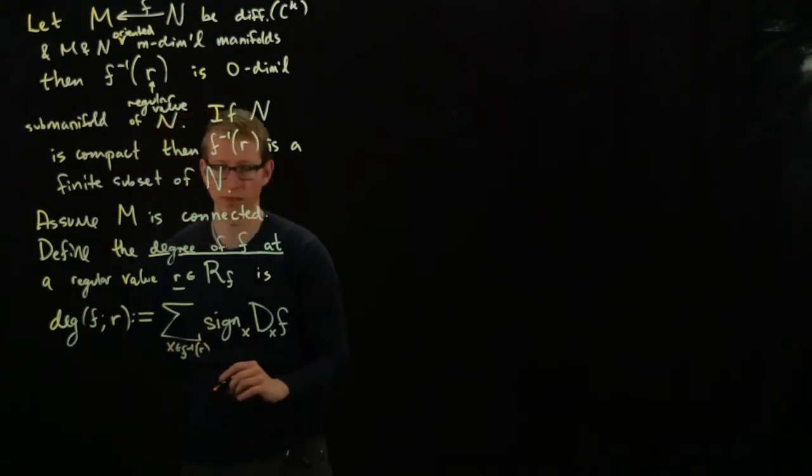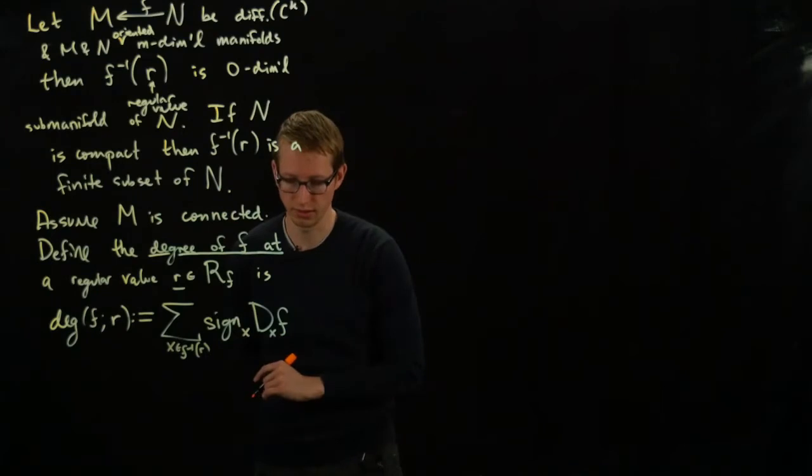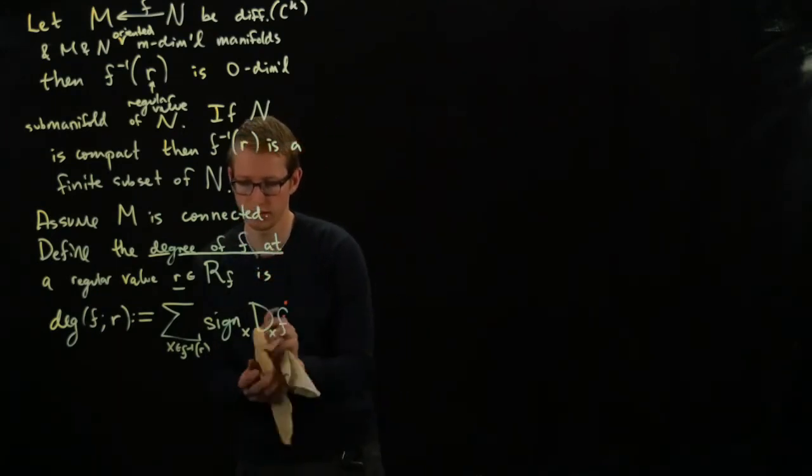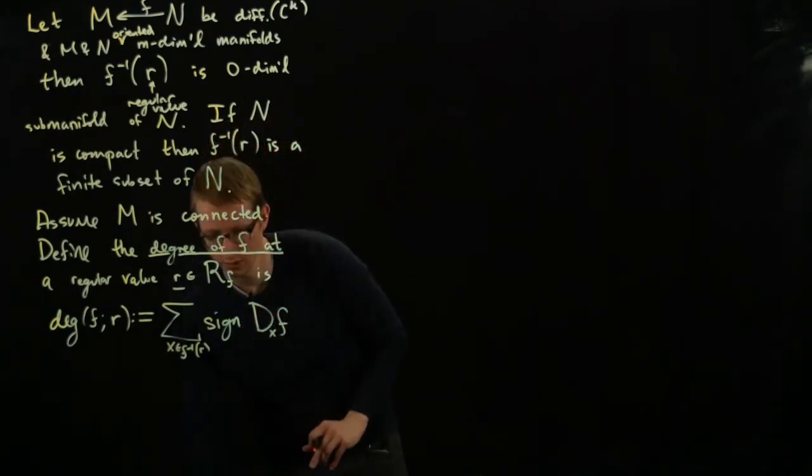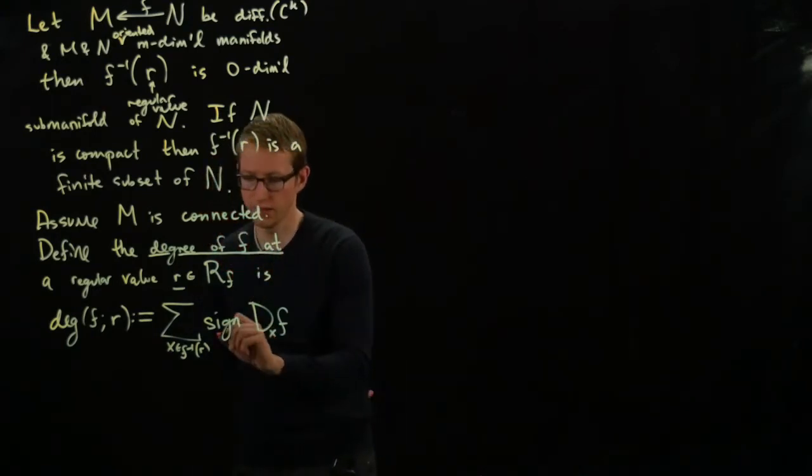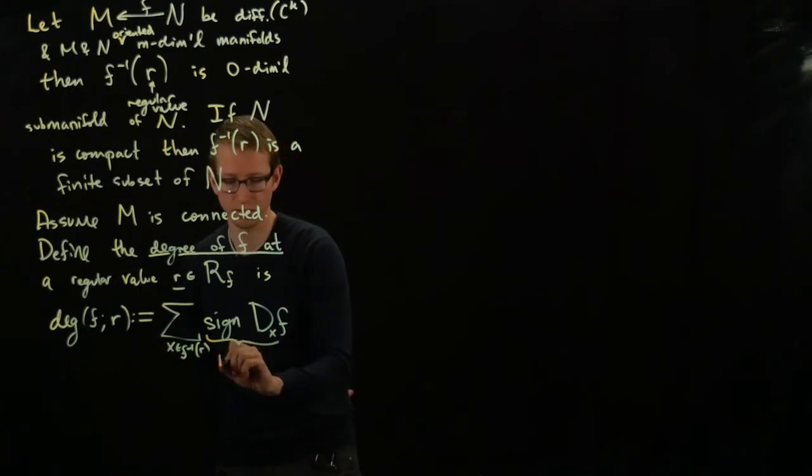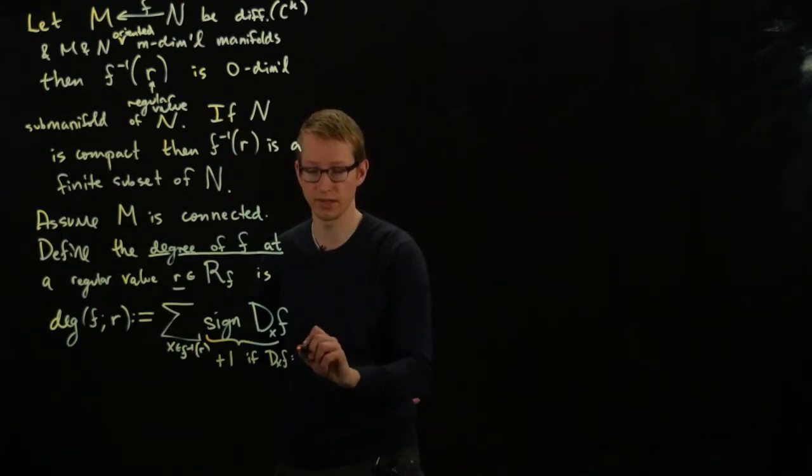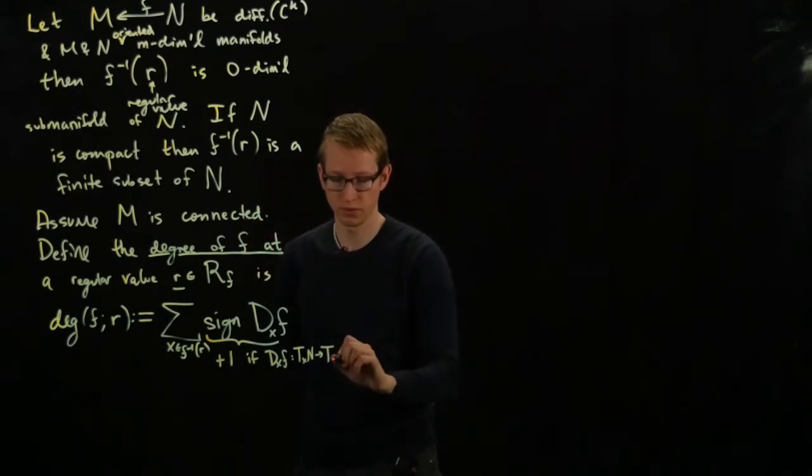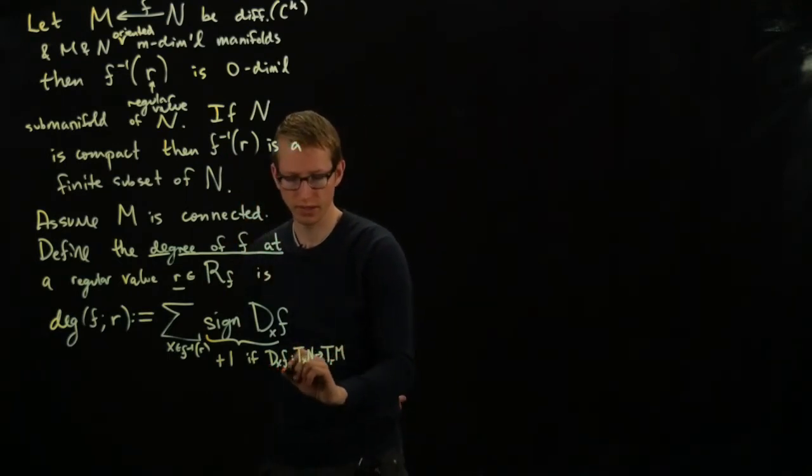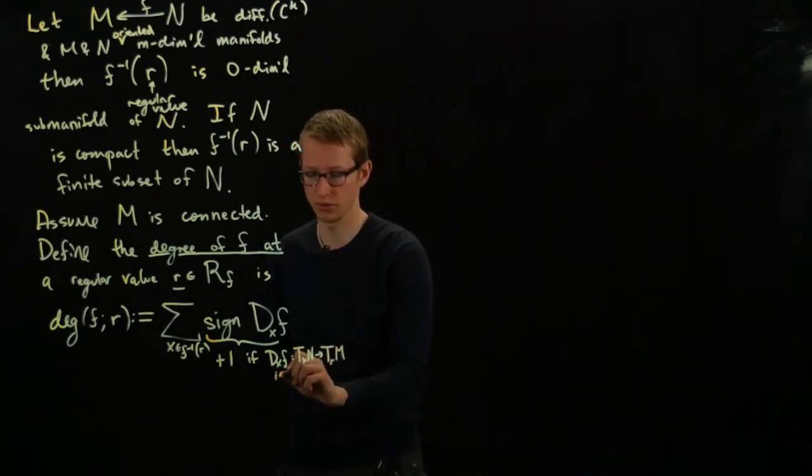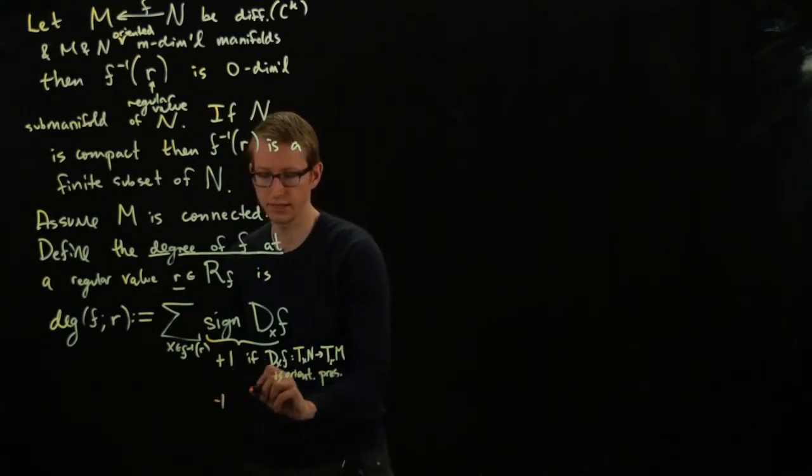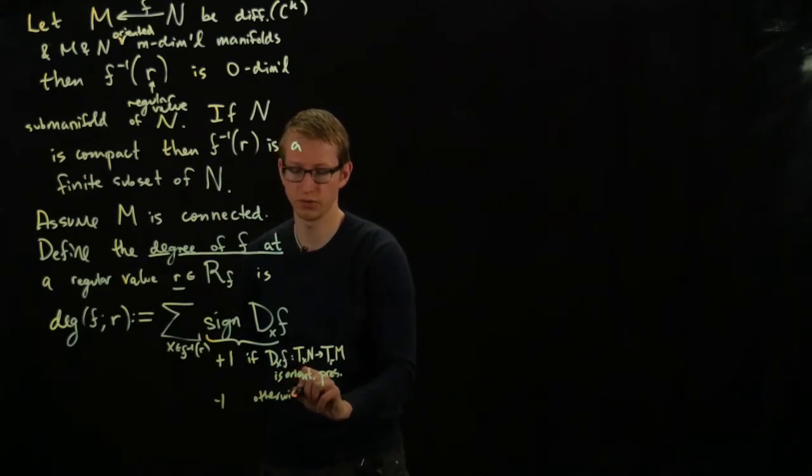Then the degree of F at R is the sum of the signs of these orientations over the inverse images of the regular value. So sign x here, that should be just sign, this quantity here is just plus 1 if d_x F, which is a linear transformation from the tangent space at x of N to the tangent space, well here, f of x is R, so we can write R_M. If this linear isomorphism is orientation preserving, or this sign is negative 1 otherwise, so if it's orientation reversing.